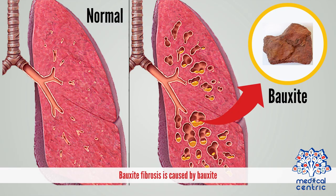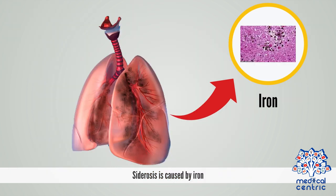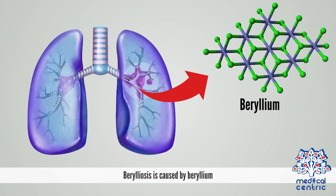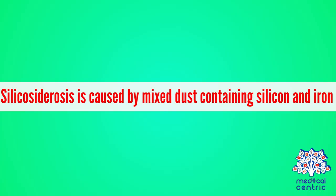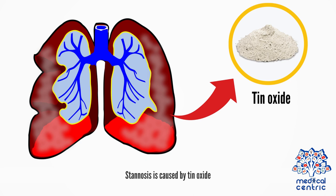Bauxite fibrosis is caused by bauxite. Siderosis is caused by iron. Berylliosis is caused by beryllium. Byssinosis is caused by cotton fibers. Silicosiderosis is caused by mixed dust containing silicon and iron. Stannosis is caused by tin oxide.